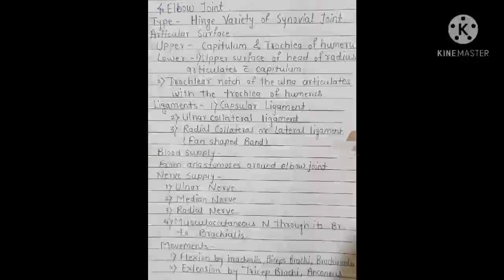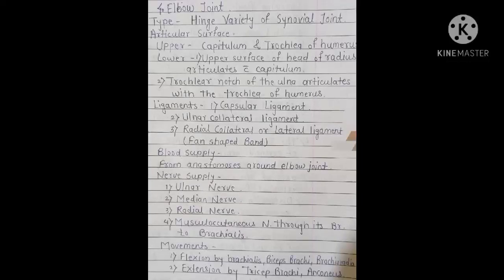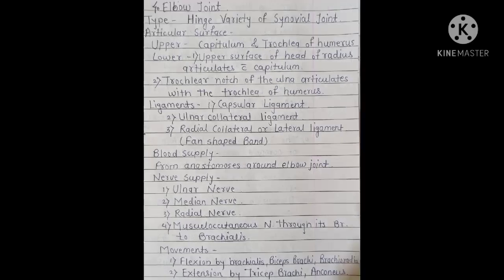The elbow joint is a hinge variety of synovial joint. Articular surfaces: on the upper side — capitulum and trochlea of the humerus; on the lower side — the upper surface of the head of the radius articulates with the capitulum, and the trochlear notch of the ulna articulates with the trochlea of the humerus. Ligaments are the capsular ligament, ulnar collateral ligament, and radial collateral (lateral) ligament, which is fan-shaped. Blood supply is from the anastomosis around the elbow joint.